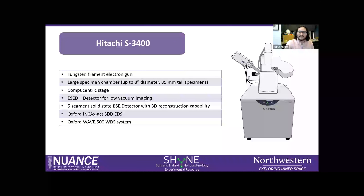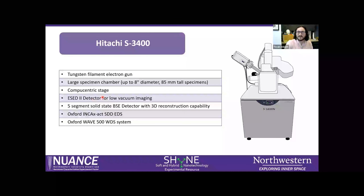The 3400 is also a Hitachi but different from the other two. It's our only tungsten filament SEM, so it's not as powerful as those cold field emission guns. But it has a very large specimen chamber for large samples, a CompuCentric stage, and an ESED (Environmental Secondary Electron Detector) for low vacuum mode to handle charging samples that can't be coated. The 3400 also has a permanently inserted segmented backscattered detector, which is great for 3D reconstructions using different angles. It also has both a solid-state EDS detector and an Oxford Wave 500 WDS system.